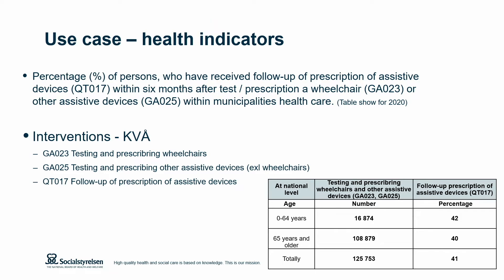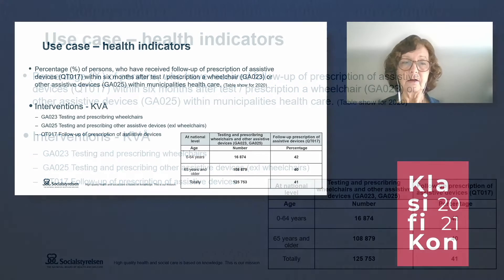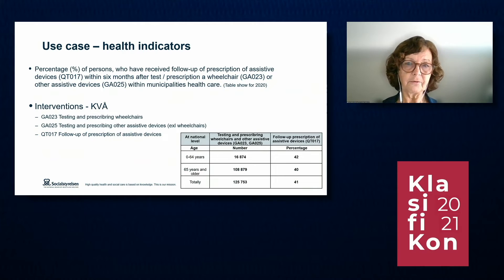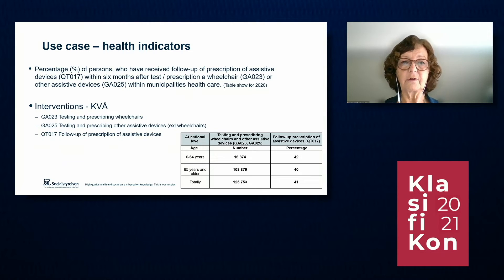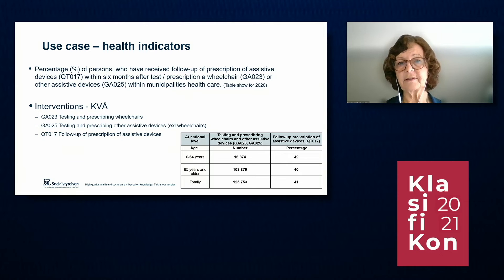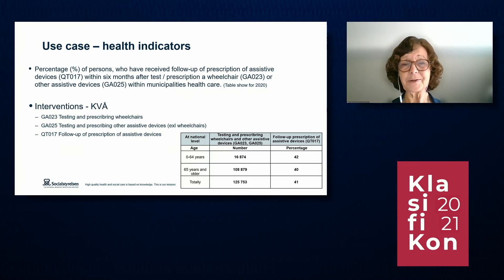Here is one use case where we use the classification for health indicators to follow up the process, because we want to follow up how many patients have received a follow-up about the prescription of wheelchairs or other assistive devices. Here you can see it's about 40% who have received a follow-up within six months.